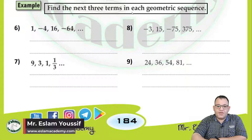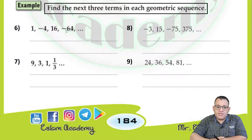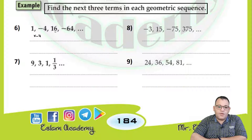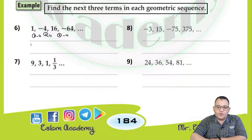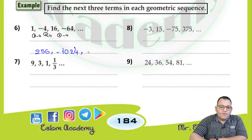In this problem, we need to find the next three terms in each geometric sequence, meaning you multiply the same number each time. To find the common ratio, divide negative 4 by 1 to get negative 4 — you multiply by negative 4 each time. Confirmed: 16 divided by negative 4 equals negative 4, and negative 64 divided by 16 equals negative 4. So: negative 64 times negative 4 equals 256, times negative 4 equals negative 1024, times negative 4 equals 4096.